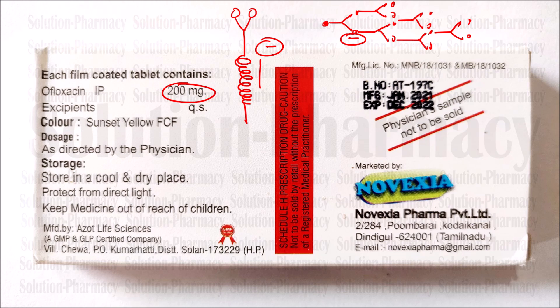Let's see further what else Ofloxacin affects. Ofloxacin affects these two points in bacteria, so bacterial cell division is reduced. Cell division means the multiplication of 1 cell into 2, 2 into 4, 4 into 8, 16, 32, and so on — this multiplication is reduced by Ofloxacin.